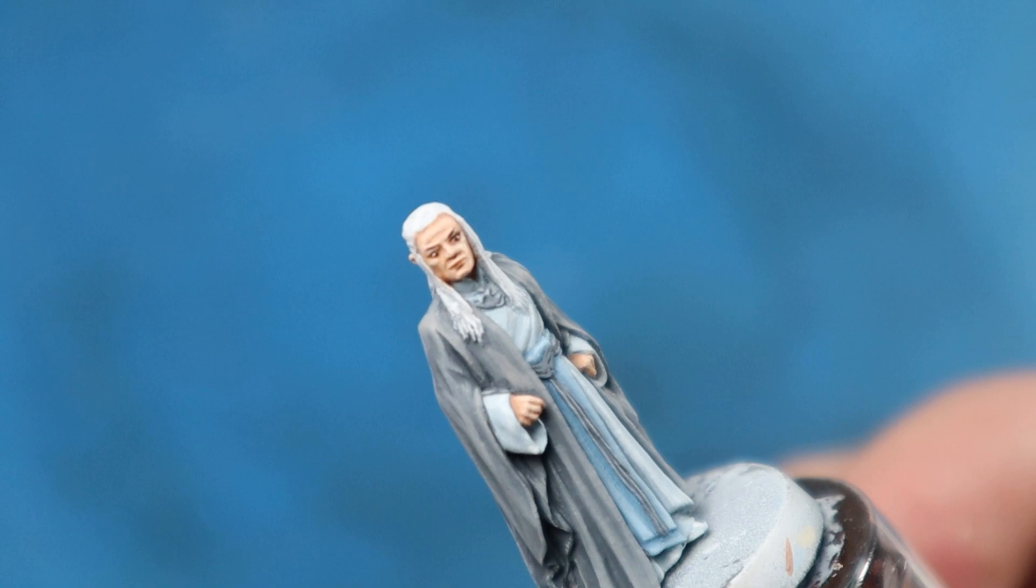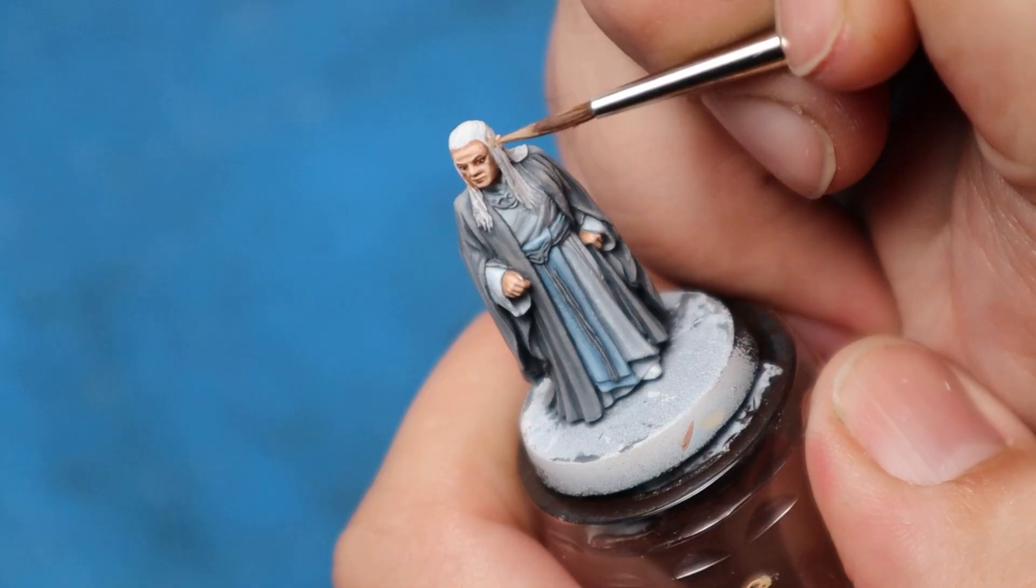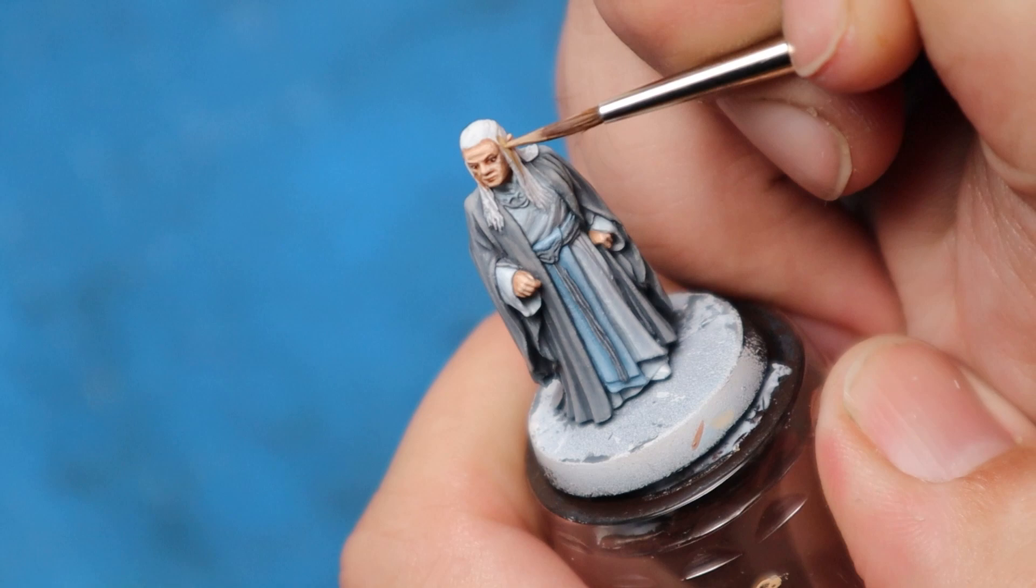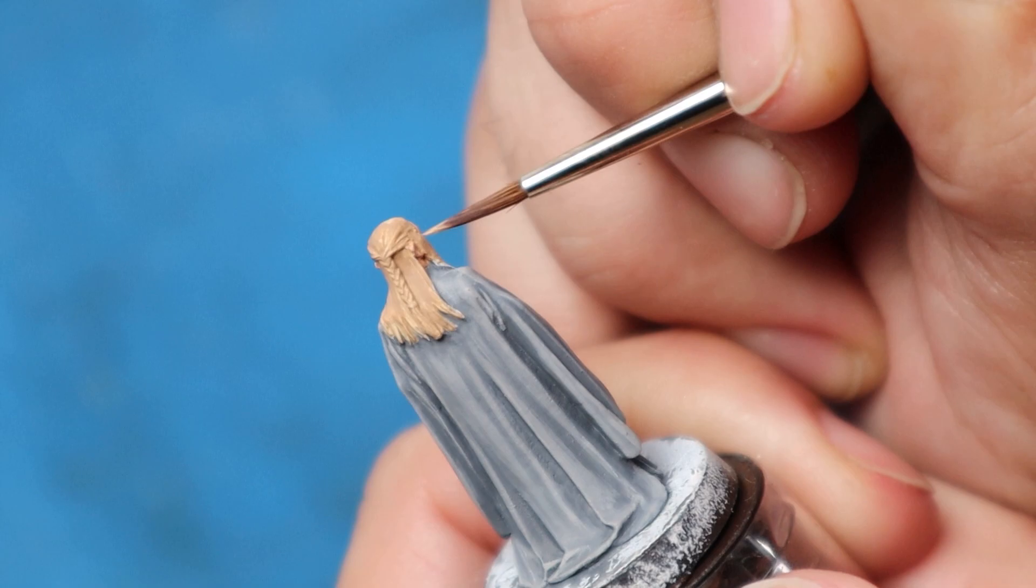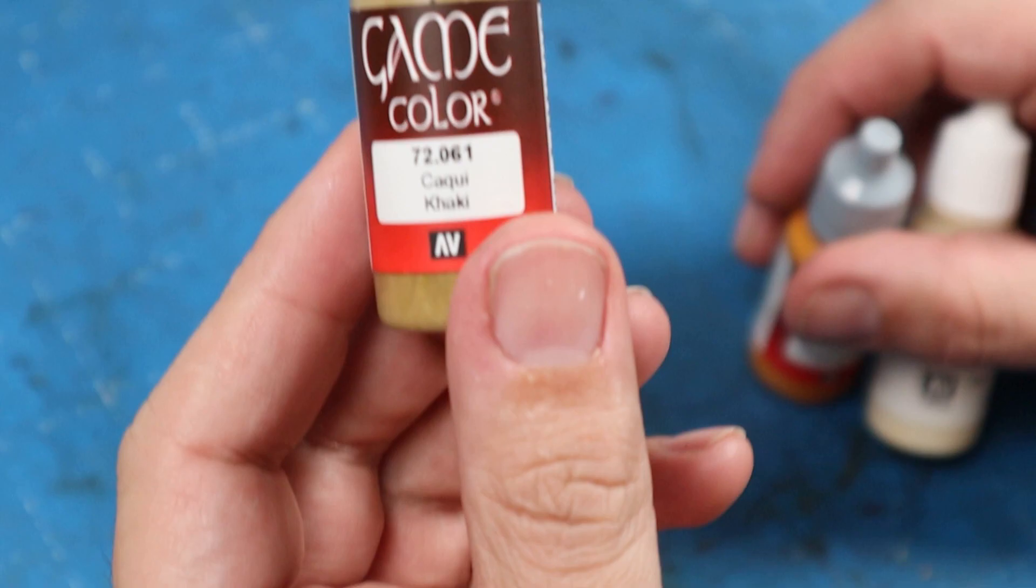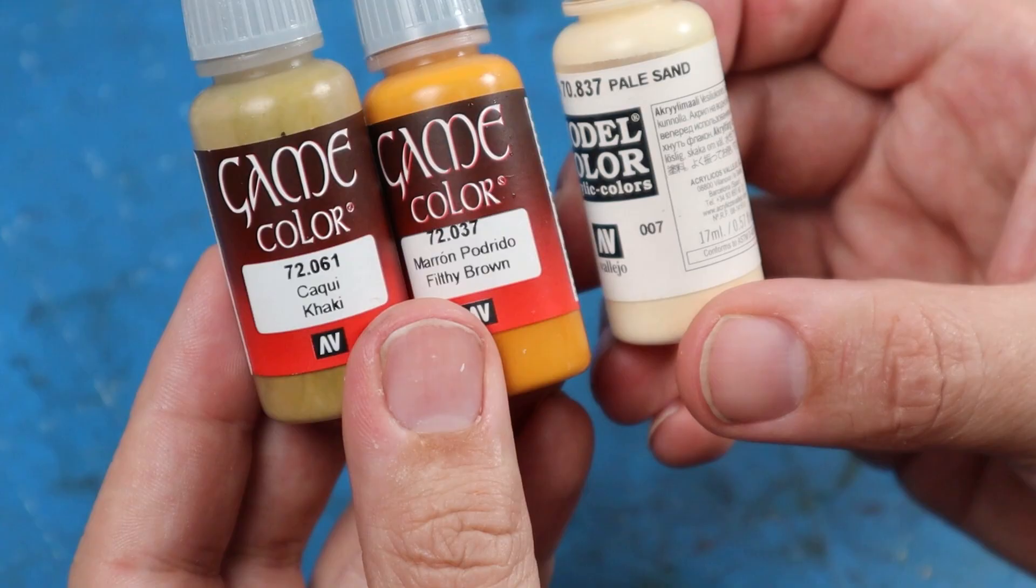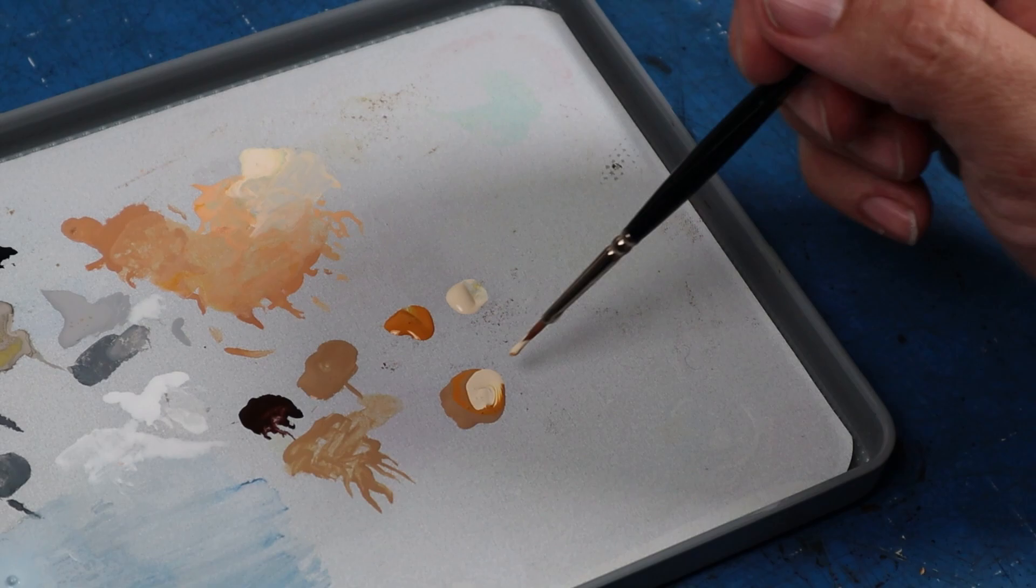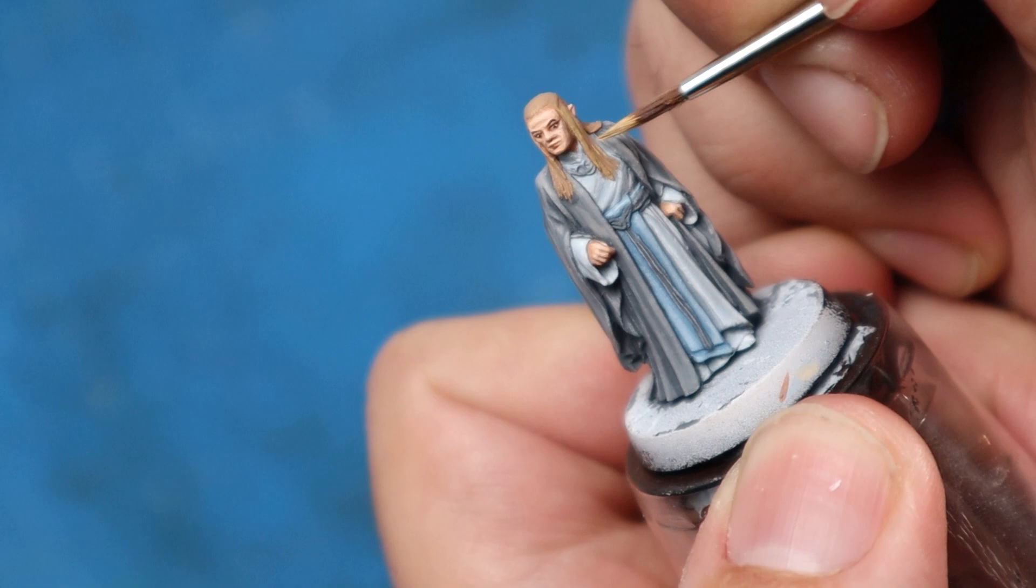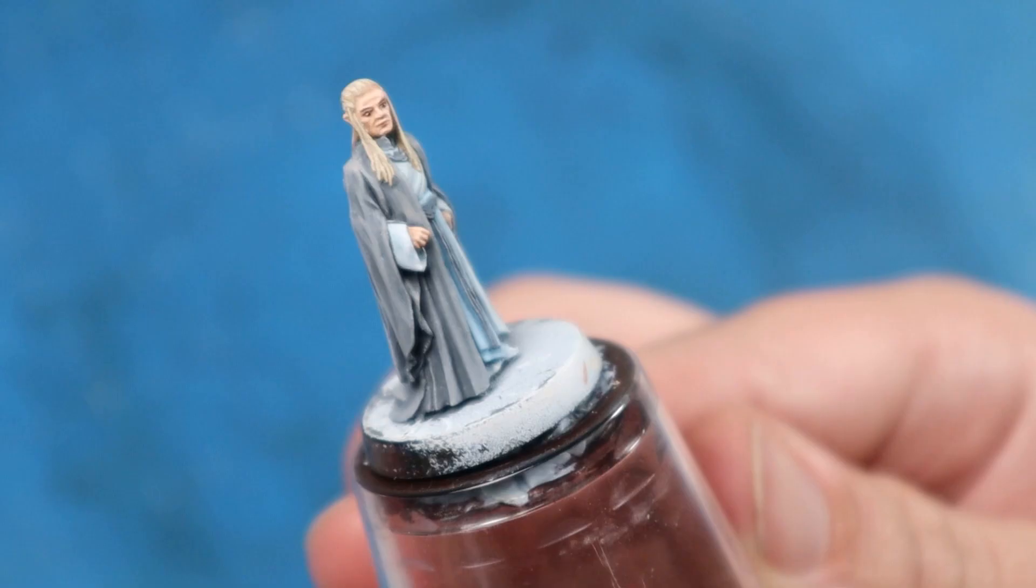Now it's time to move on to the hair. I started out with Vallejo Khaki, and used it as a base colour. Again, being very careful around the edges, not to get any on the areas I'd already painted. Then, from the Khaki base, I started to mix in a little filthy brown to give it some yellow tones, and some pale sand to lighten it all. I blended the two colours together, and then applied it as a mid-tone to the hair. I then did a final highlight of pale sand on its own, just picking out the individual strands of hair.